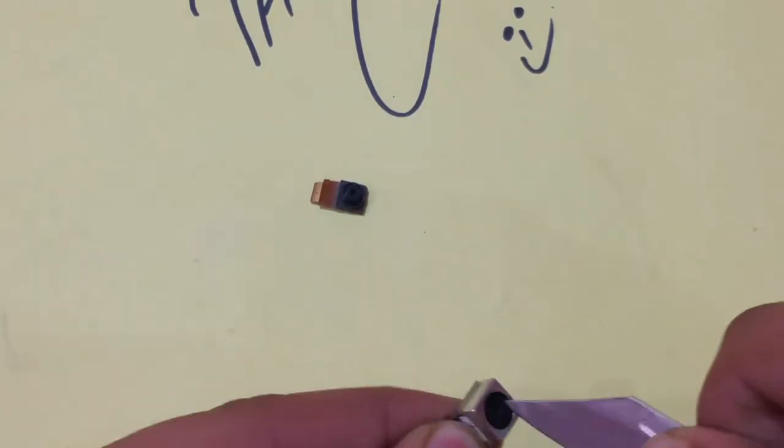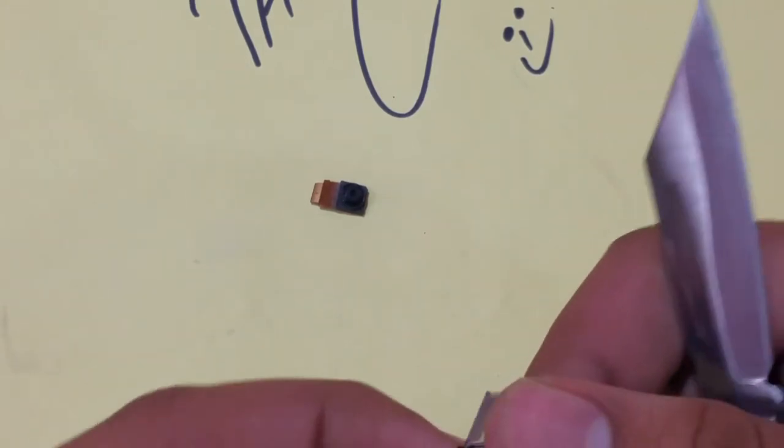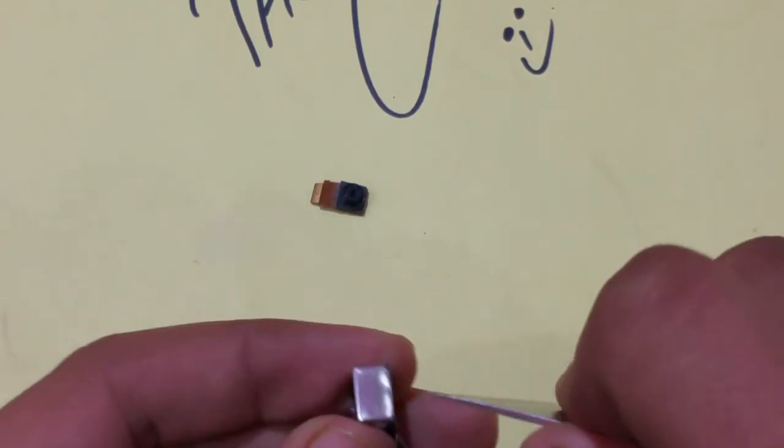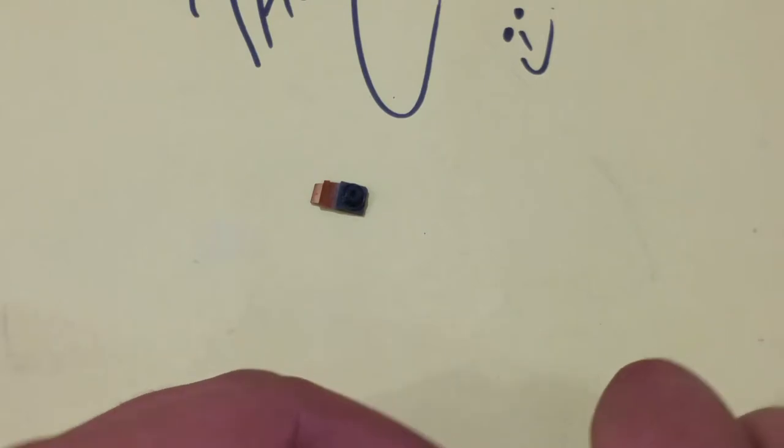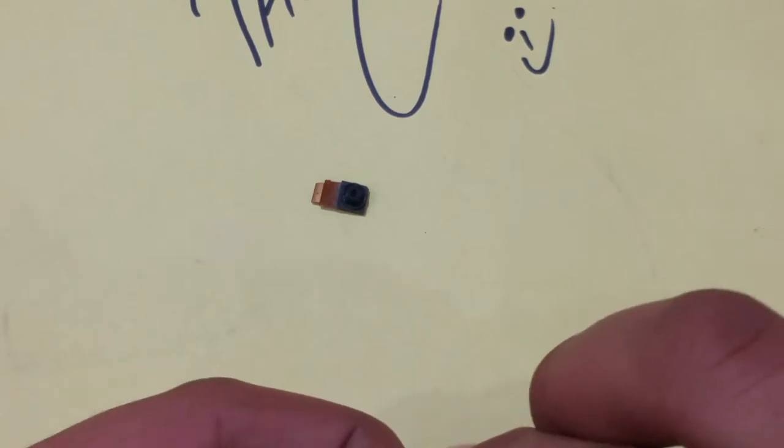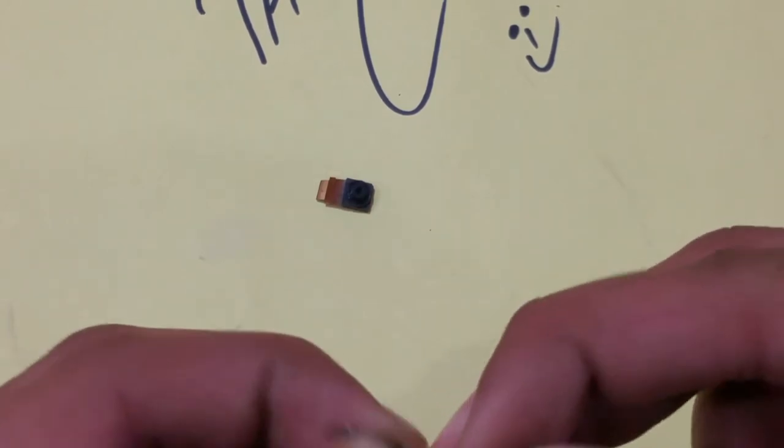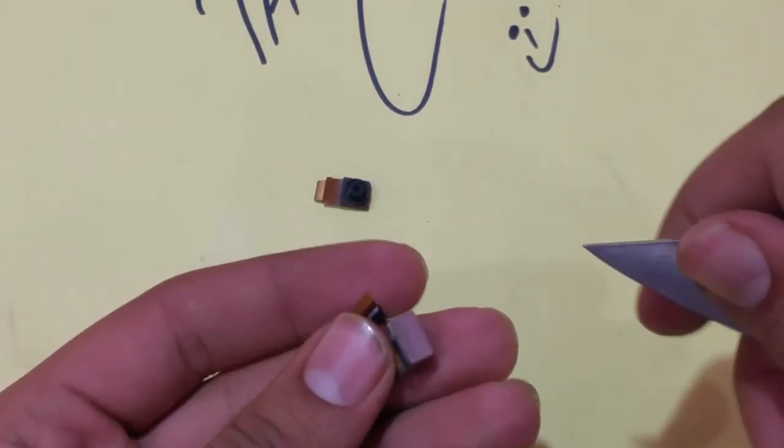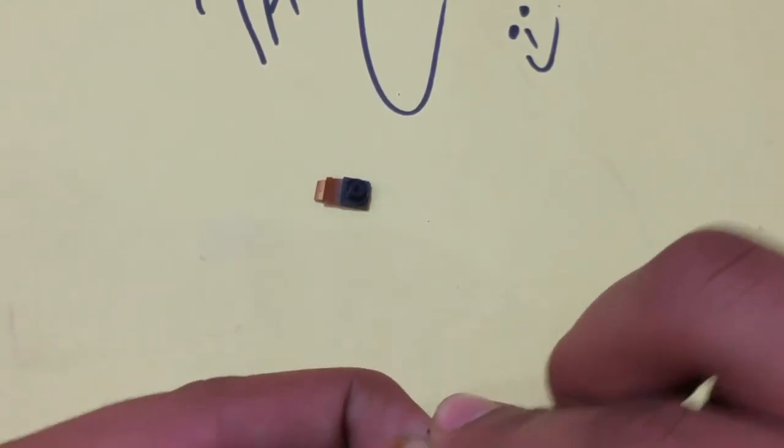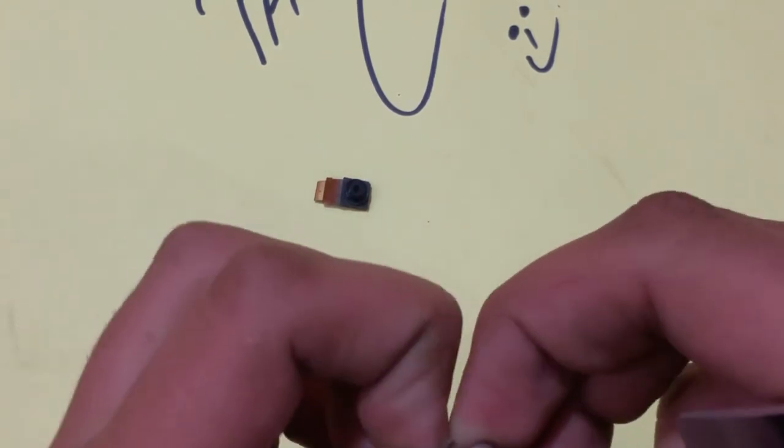We're now trying to remove the lens from its shell, but it's not going well. As you can see, it's really not working. I'm trying to cut from the sides and remove the tape, but I'm unable to do so. It's not working as I expected.